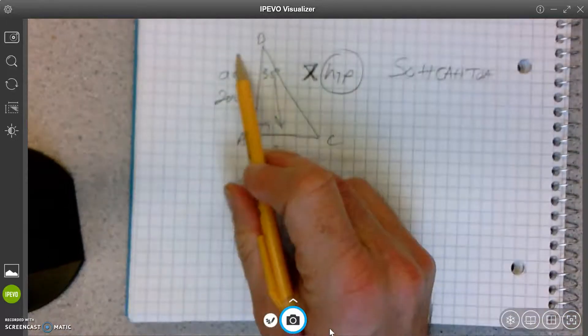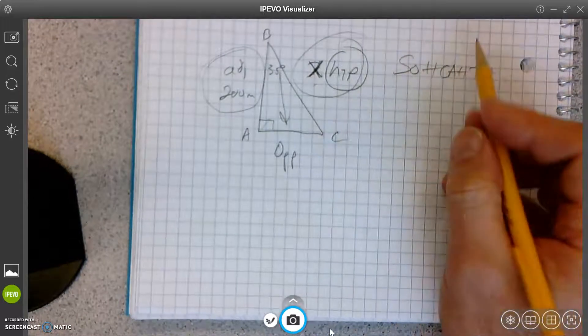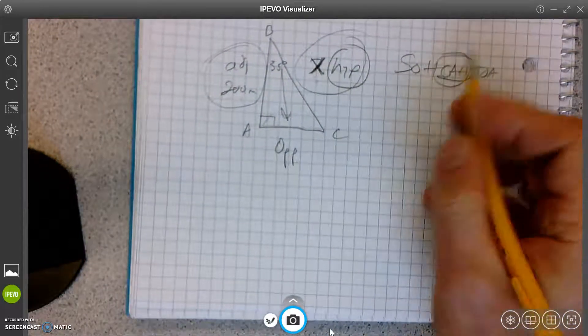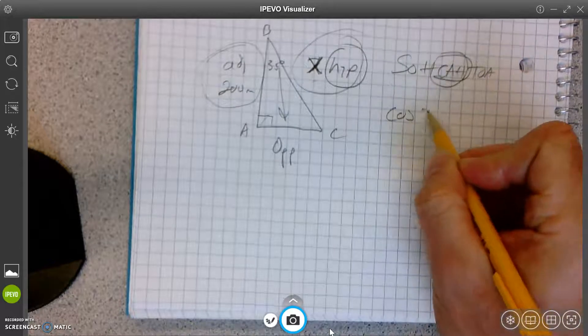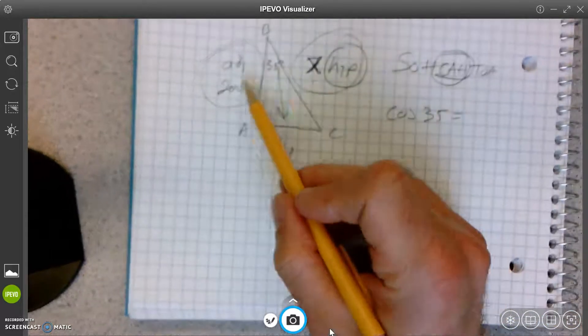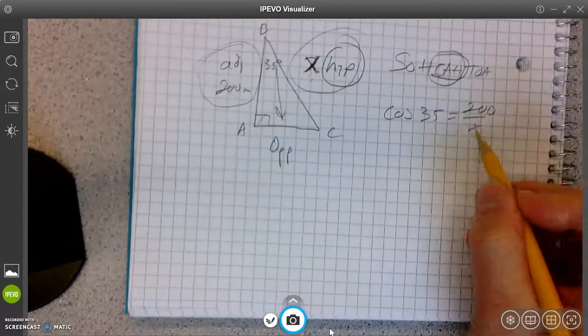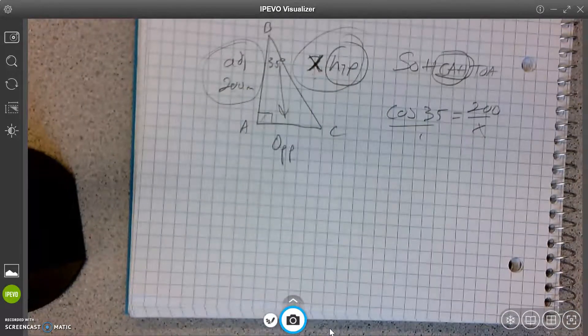All right. So what am I going to use? I have adjacent and hypotenuse. Nothing on the opposite. So what am I going to use? Yeah, cosine. Cosine of 35 equals adjacent, which is 200. It has to be in the order. Adjacent over hypotenuse. X over 200 would be wrong.